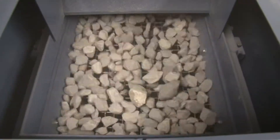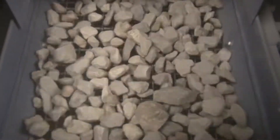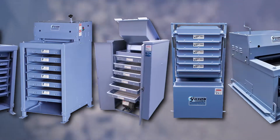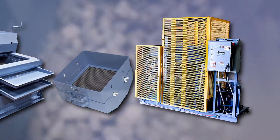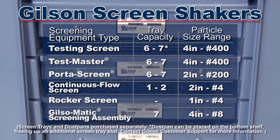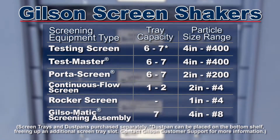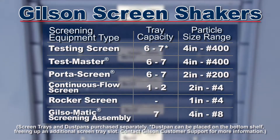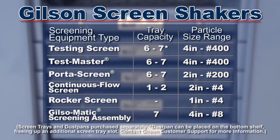Gilson testing screens efficiently separate coarse aggregates into six or seven particle size fractions. Gilson's wide array of testing screen models have been the industry standard for decades, from the Gilson TS3 testing screen with its seven screen tray capacity to the Gilsonmatic screening assembly. Gilson has the right screening equipment for your particle size determinations.